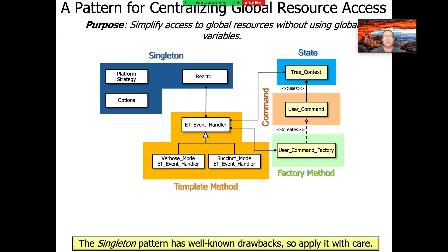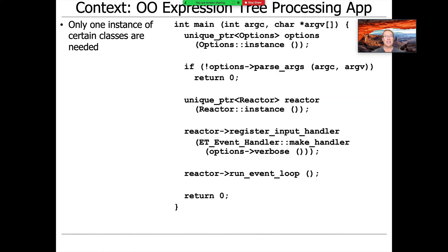We're going to use Singleton in our expression tree processing app case study to allow us to access global resources without using global variables. This is a time-honored challenge, especially in a language like C++, where global variables come with some weird semantics that make them tedious, error-prone, and very tricky to use properly. The context here is that there are certain types of objects in our expression tree that we only need one instance of.